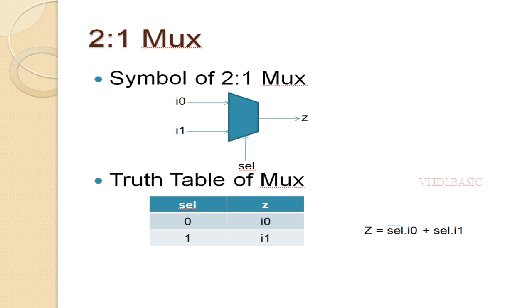Referring to the truth table of the 2:1 MUX: whenever Select is 0, I0 will be assigned to output Z; whenever Select is 1, I1 will be assigned to output Z. The boolean expression of the 2:1 MUX is: Z equals Select-bar dot I0 plus Select dot I1.